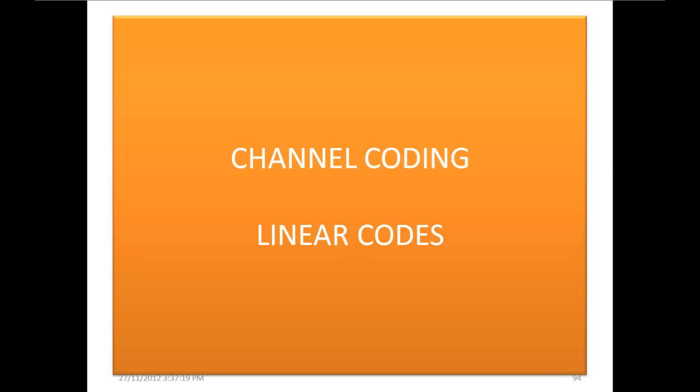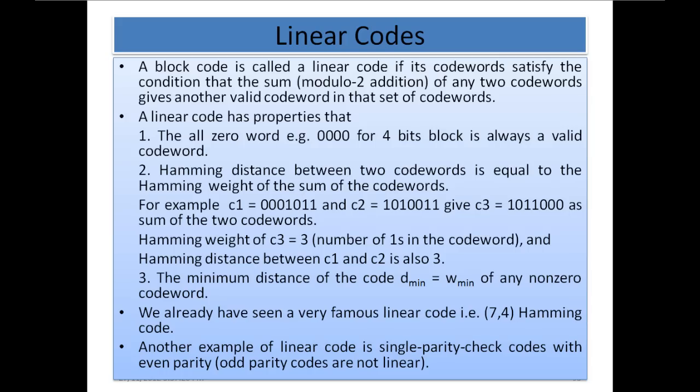In this section we will learn about linear codes, which is a part of channel coding. A block code is called a linear code if its codewords satisfy the condition that the sum modulo-2 addition of any two codewords gives another valid codeword in that set. This means if we add any two codewords in the set, the result will always be another valid codeword.